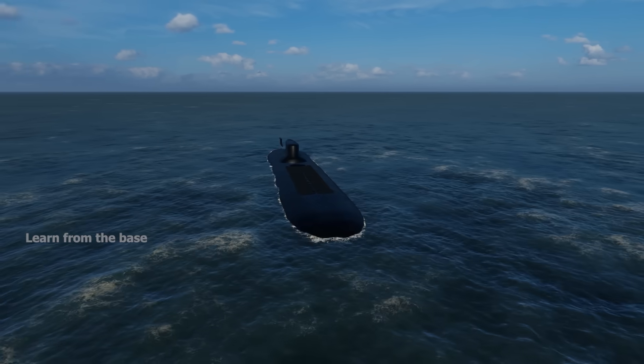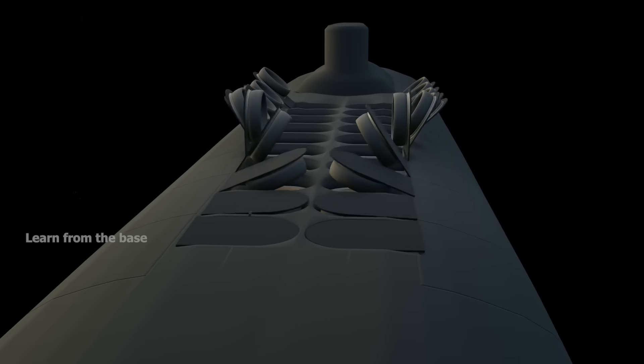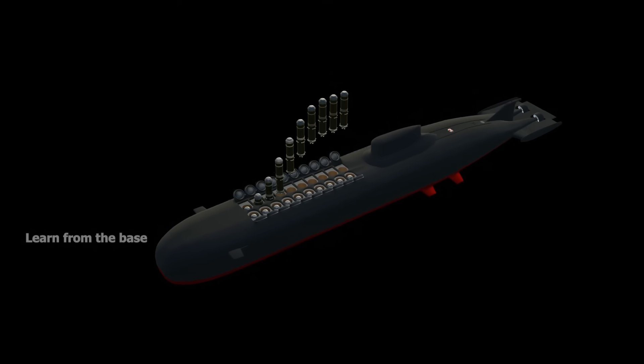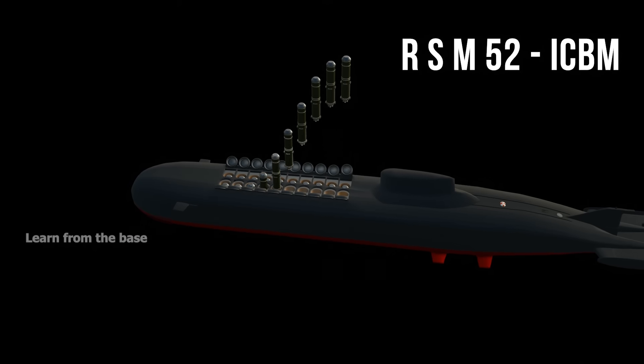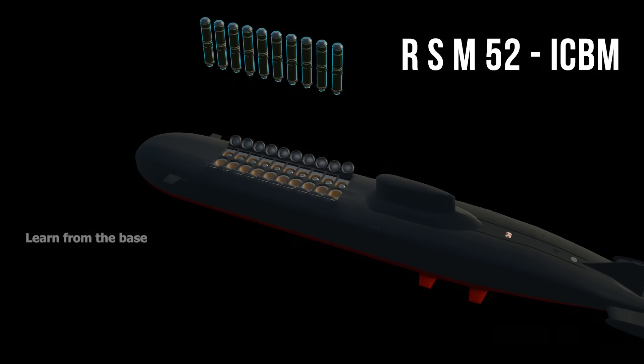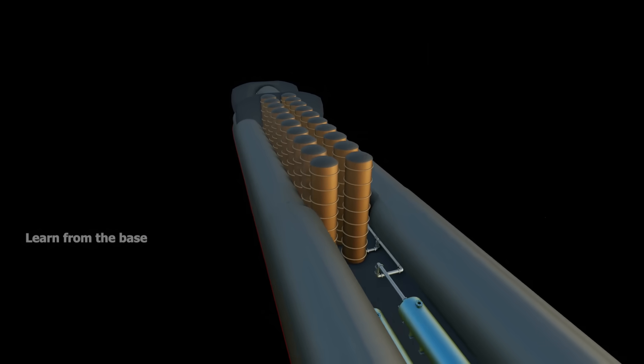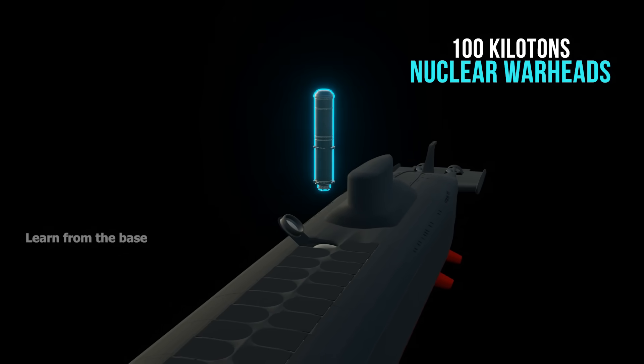Nuclear submarines carry a wide array of offensive and defensive weapons. The primary weapon system is composed of 20 RSM-52 intercontinental ballistic missiles. The two rows of missile launch tubes are situated between the main hulls. Each missile consists of 100 kilotons of nuclear warheads. That is enough to destroy a 1 kilometer radius.